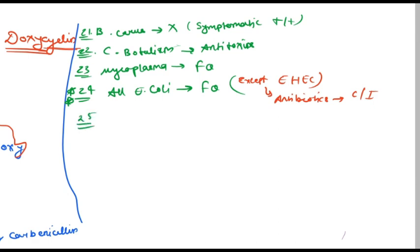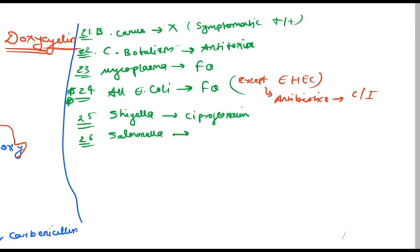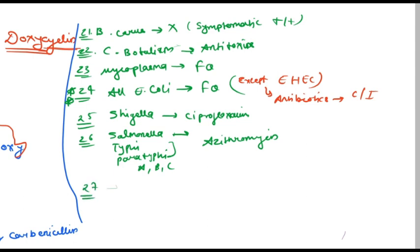The 25th is Shigella — for Shigella we give ciprofloxacin. The 26th is Salmonella: for Salmonella typhi, paratyphi A, paratyphi B, and paratyphi C, the drug of choice is azithromycin. The 27th is Salmonella typhimurium — for that we give third-generation cephalosporins.